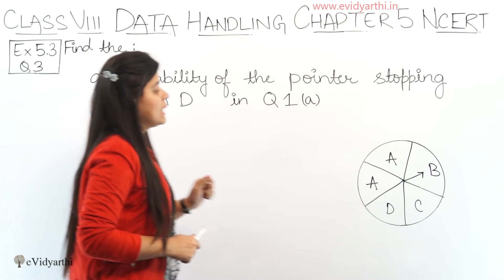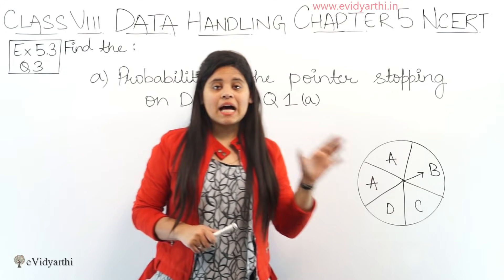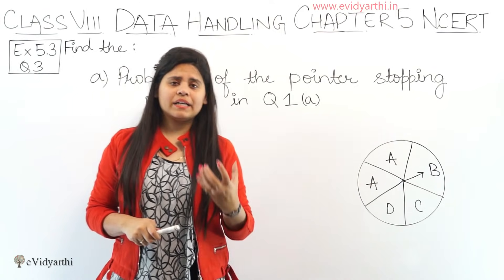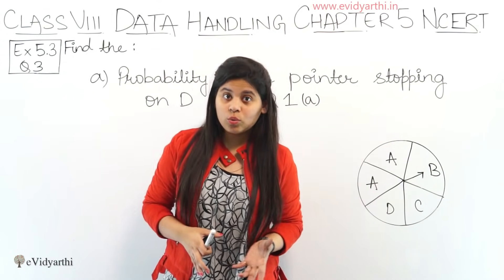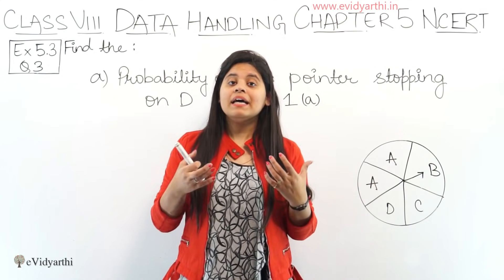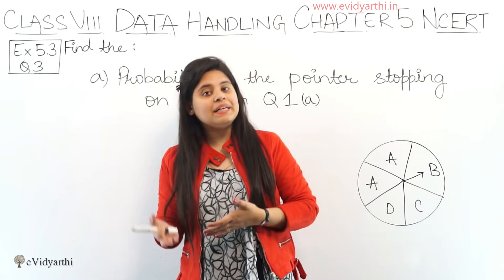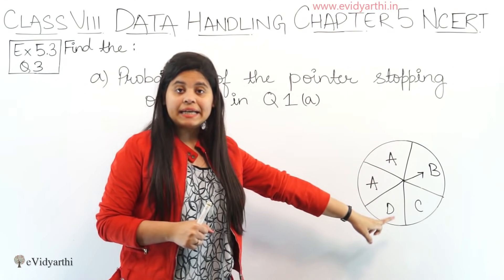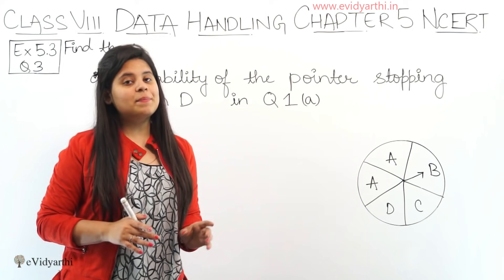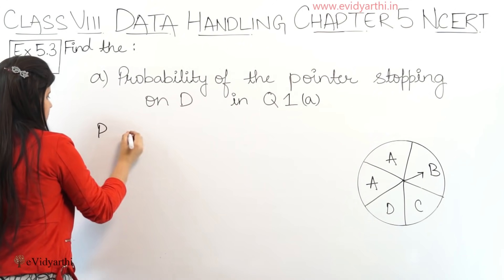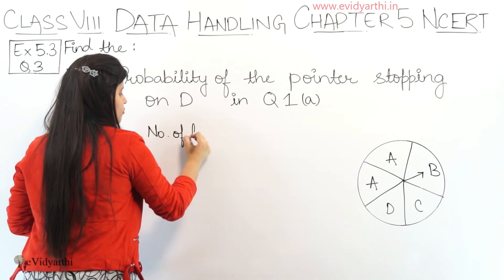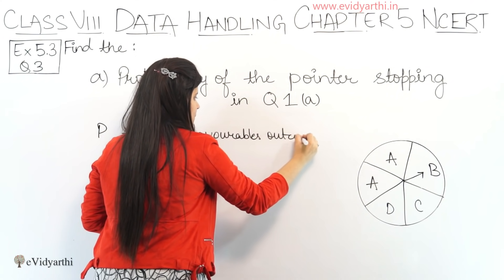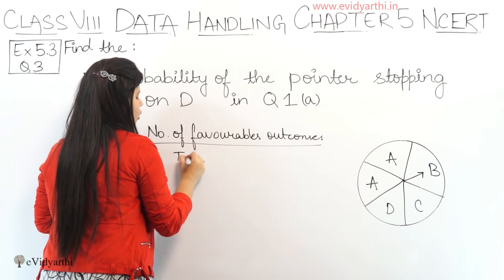So we are asked: what is the probability that we will spin it and this arrow will come to D? The first word is probability. What does probability mean? In normal meaning, it is chances — like if it will rain or not, what are the chances? So we have a formula: number of favourable outcomes upon total number of observations.